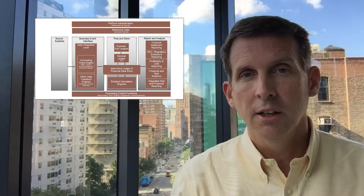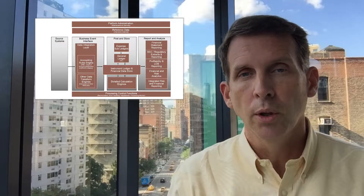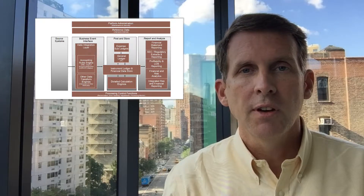Below that we have the reference data environment — reference data and rules might be a better name for this. This environment includes both internal and external reference data. Internal reference data describes the nature of the instrument ledger; it describes the values that come in from our source system and are translated into platform values as they go through the accounting rules engine and other transform engines. These values are going to be maintained in tables, and we have to have a way of maintaining, updating, and creating those tables — all of that work goes on in the reference data environment.